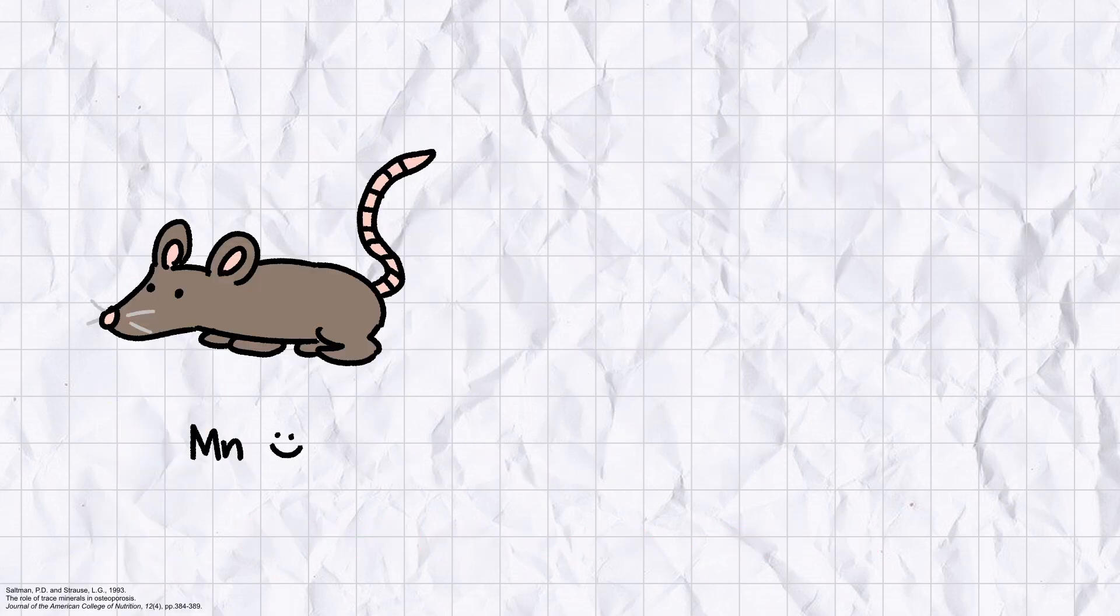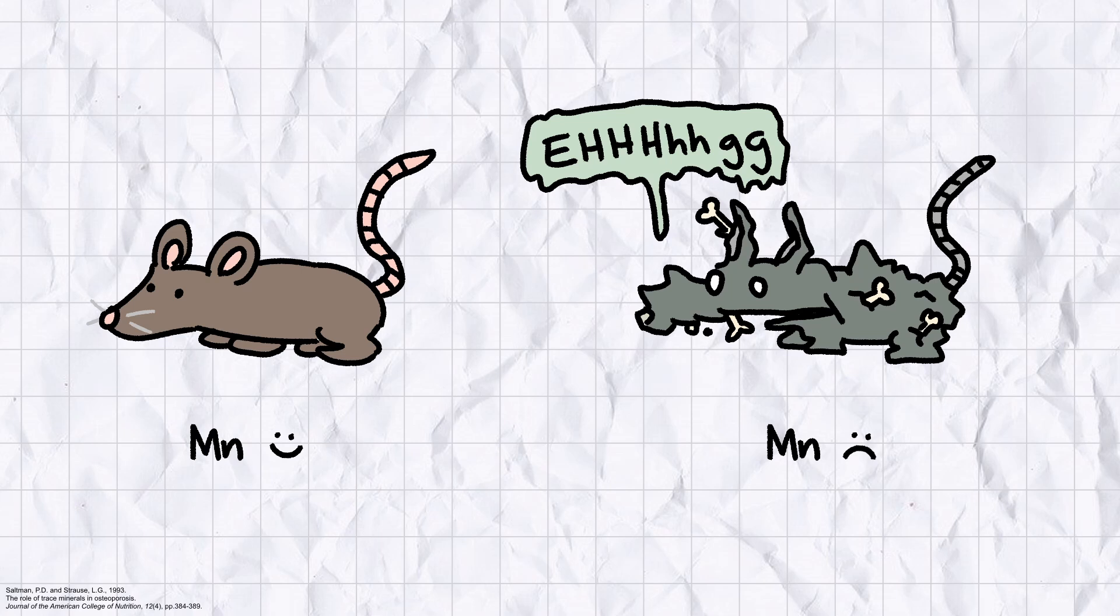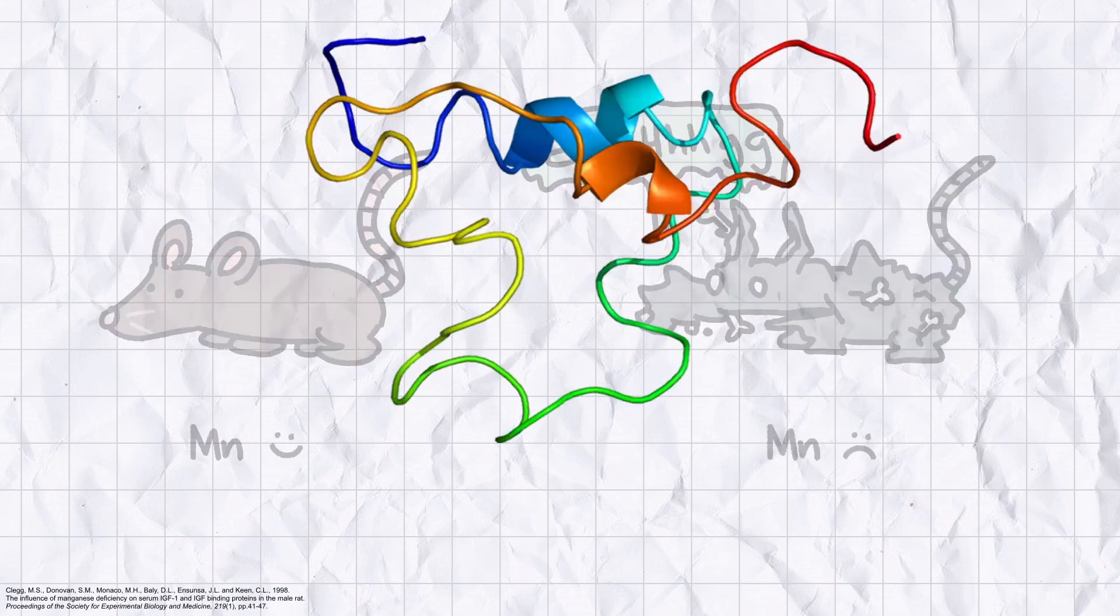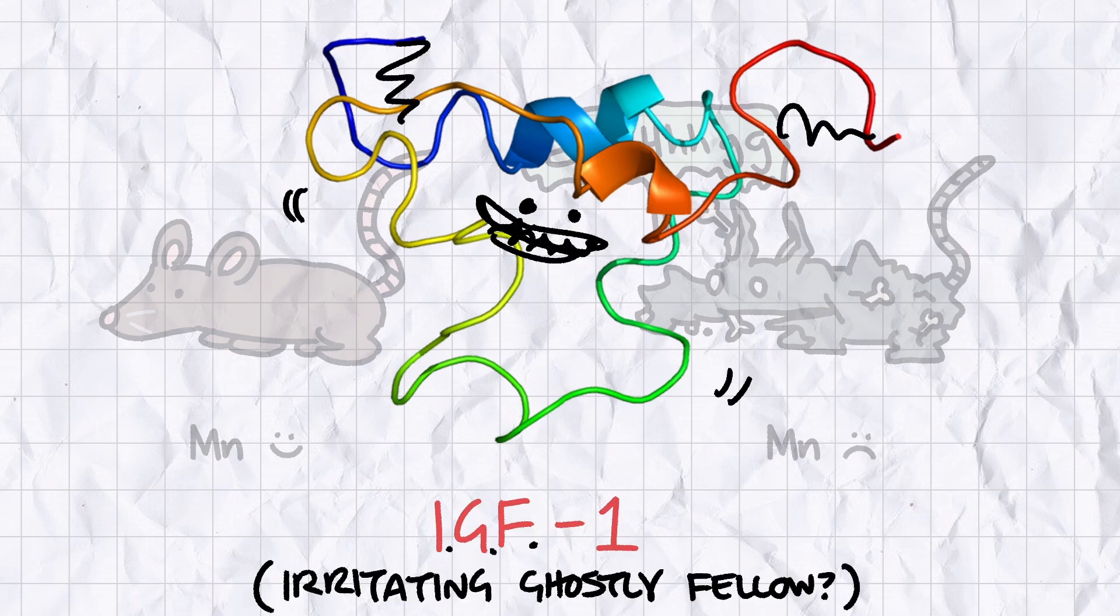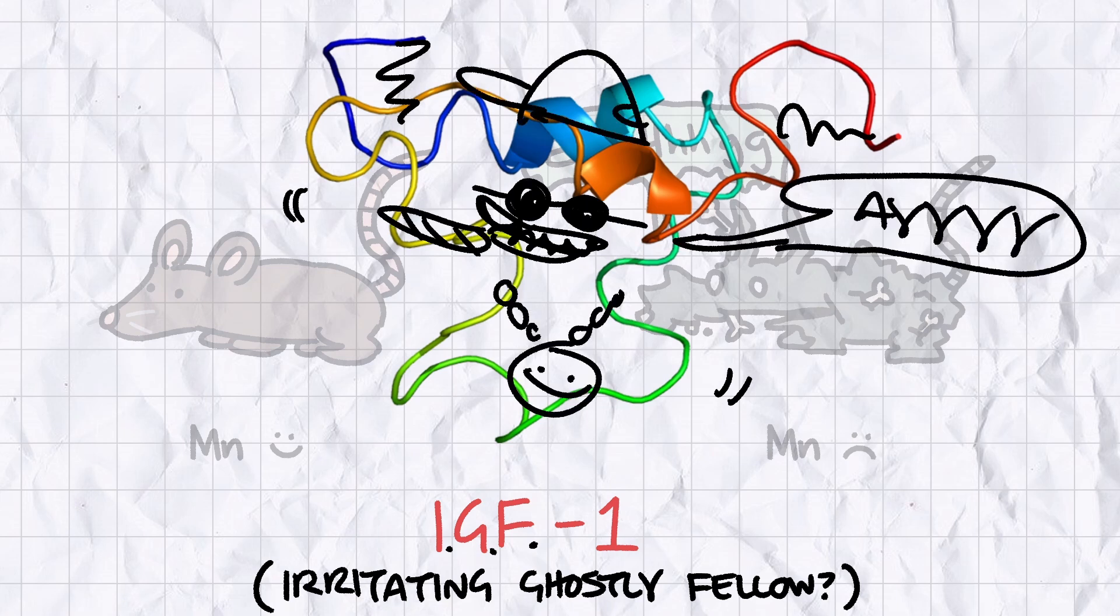In rats, manganese deficiency was associated with skeletal abnormalities, and a 1998 study at UC Davis linked manganese deficiency to lower circulating concentrations of IGF-1, the hormone largely responsible for growth spurts in adolescence. Fortunately for a guy that knows sweet Fanny Adams about biochemistry, this isn't exactly a pressing issue.